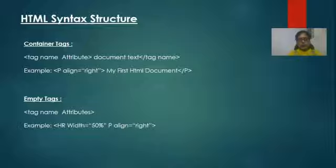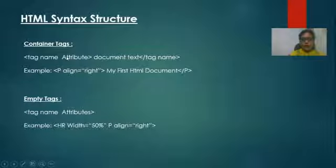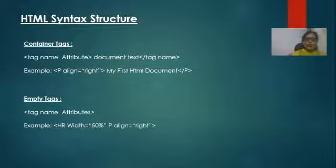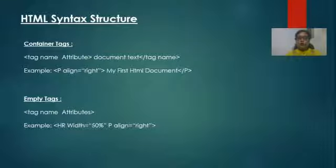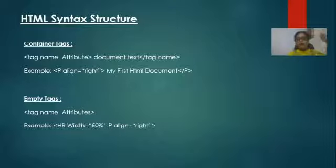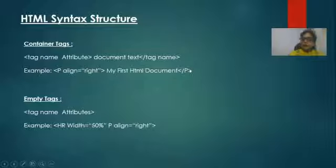For the syntax structure of a container tag, you write the tag name and its attribute, then the content you want to display, and then slash tag name to close it. For example, the p tag is used for paragraph. You can use the align attribute with values left, center, or right. By default, if you don't use the align attribute, the paragraph will align to the left-hand side. Since it is a container tag, it is closed with slash p.